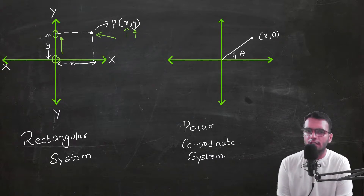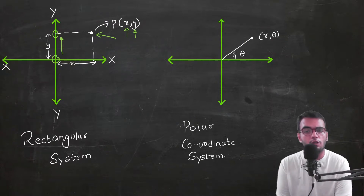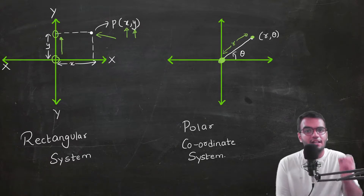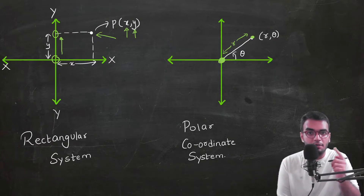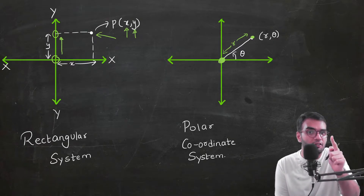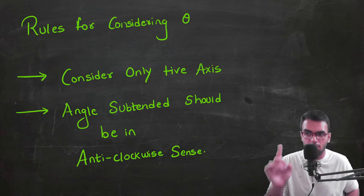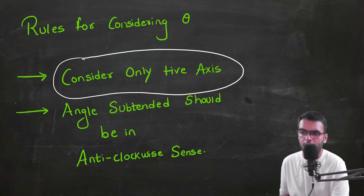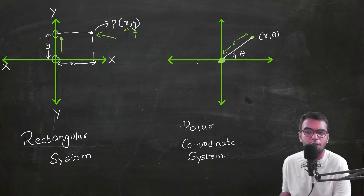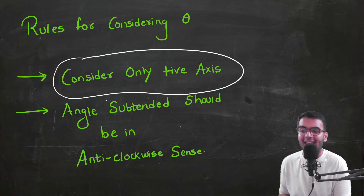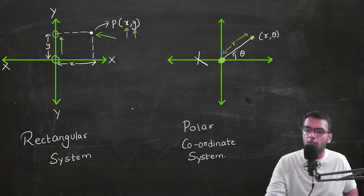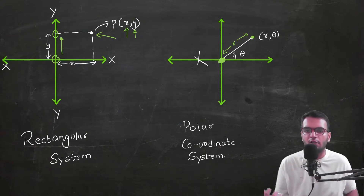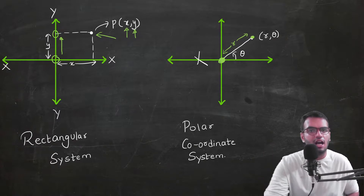In the polar coordinate system, we first measure the distance from the origin to the point — that distance is called r. Then we measure the angle theta, which starts from the positive x-axis in the anticlockwise direction. Two rules: measure only from the positive axis, and the angle must be in the anticlockwise sense. With r and theta you can calculate the coordinate of any point.